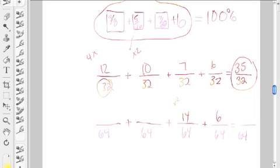16 here goes into 64 four times, so we would do 5 times 4 and get 20. 8 goes into 64 eight times, so we would do 3 times 8 gets 24.